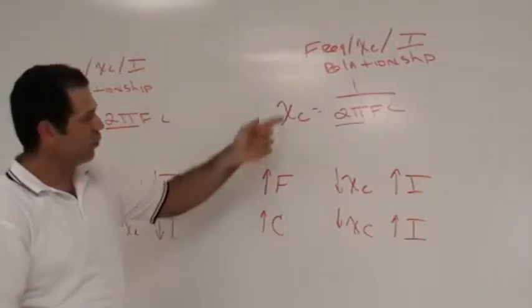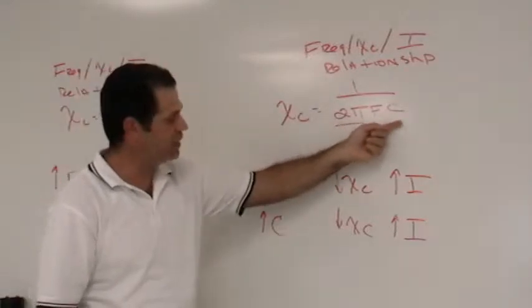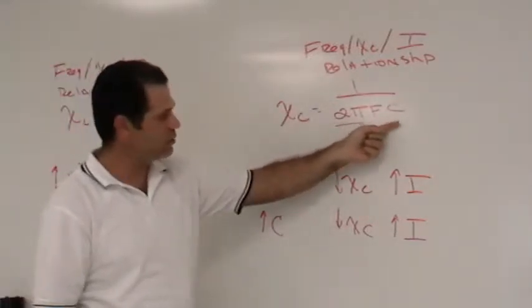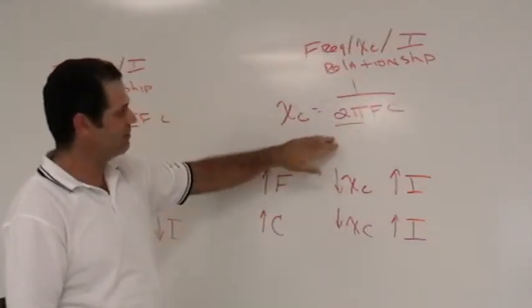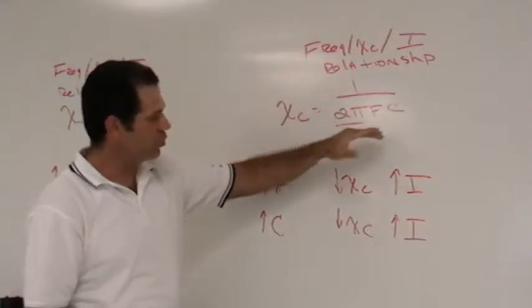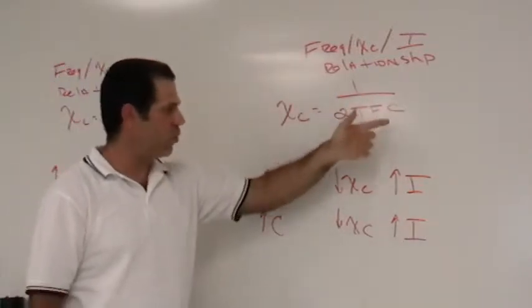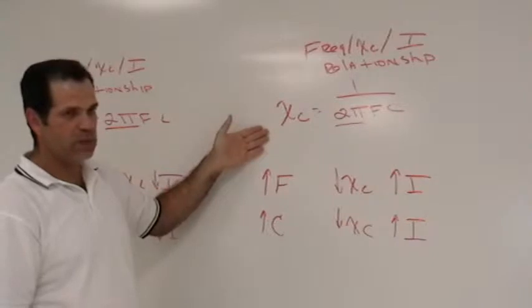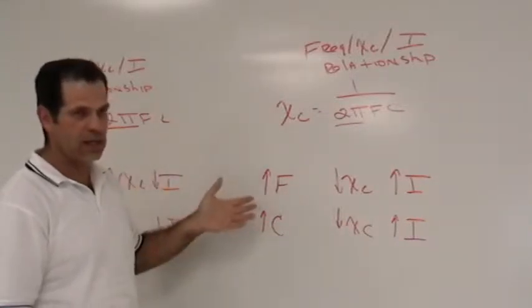In capacitive reactants, the formula is 1 over 2 pi fc. Now, 2 pi fc is being reciprocated, or it's being divided into 1, so if any of the values in the bottom go up, the outcome will be inversely proportional. It goes down.